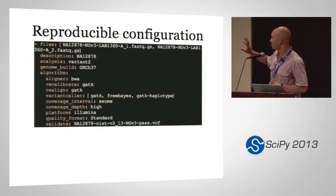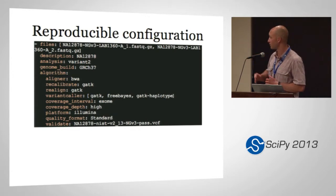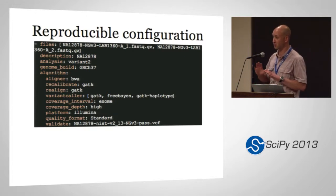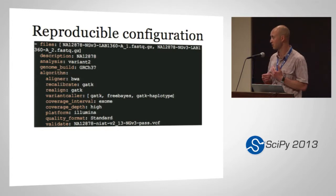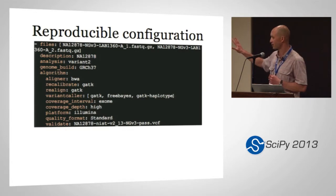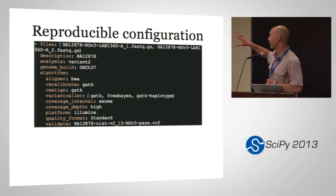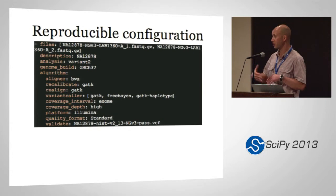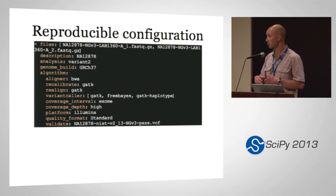The input to define what you want to do is a simple YAML configuration file. It's nice and text-based — you stick it in a GitHub repository for a complete history of everything you've changed in your analyses. It's meant to be a high-level domain-specific language for defining what you want to do. So you're telling it: it's an Illumina exome sequence with high coverage, and you want to call variants with three different variant callers. It takes this and translates it into the actual best practice pipelines run under the hood.